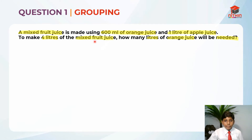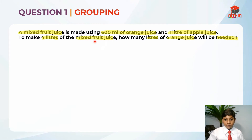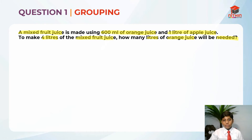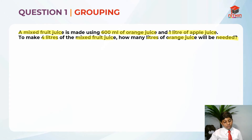Now we need to do the conversion. We need to do the conversion because to make it easier for us to solve, all of the units are different — ml, liter, liter. So we should make the units the same. For this video, I'm going to convert the units from liters to ml, so everything will become ml. But if you want to do it the other way around, you can convert 600 ml into liters as well.